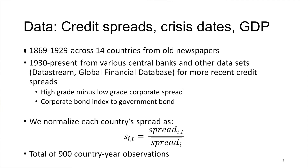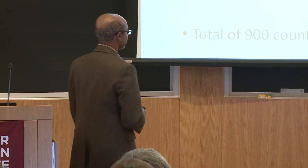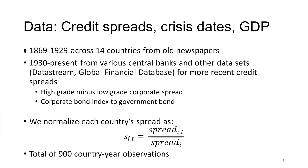One thing you immediately realize is that the credit quality of spreads across different countries is different — in some cases something like a AAA to BBB spread, in others maybe a CCC to government bond spread. We need to normalize these spreads so the underlying information is the same. For each country, we take the spread and divide it by the average spread for that country — roughly saying, take the time variation and represent it as deviation from the average. Doing that across all countries gives a fairly consistent sample. We have a total of 900 country-year observations as a result.